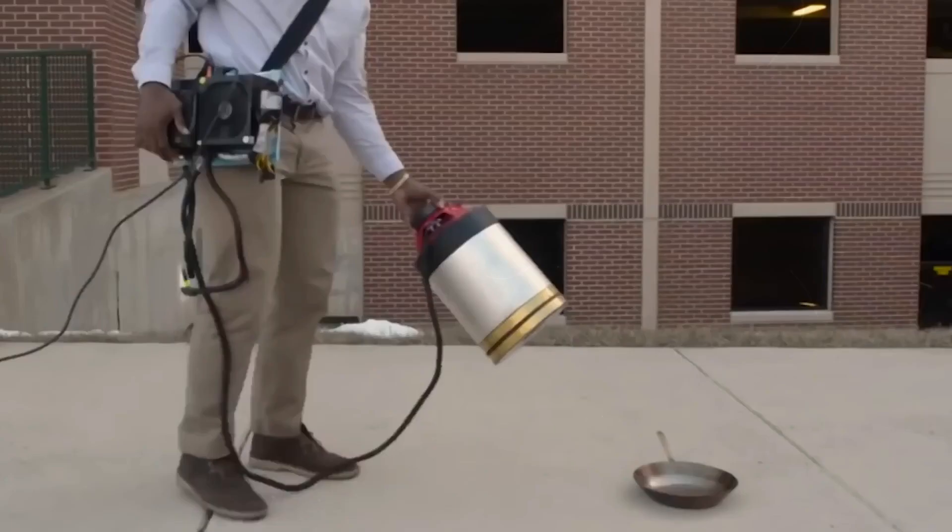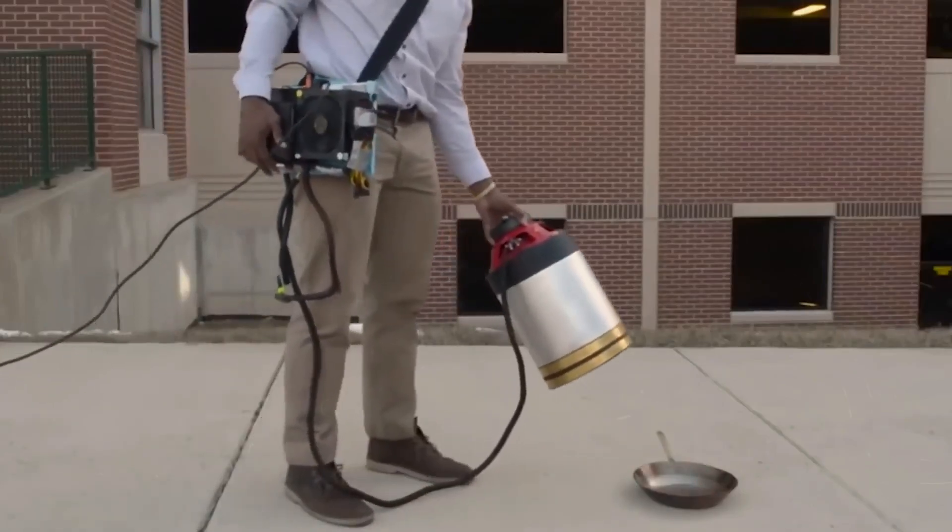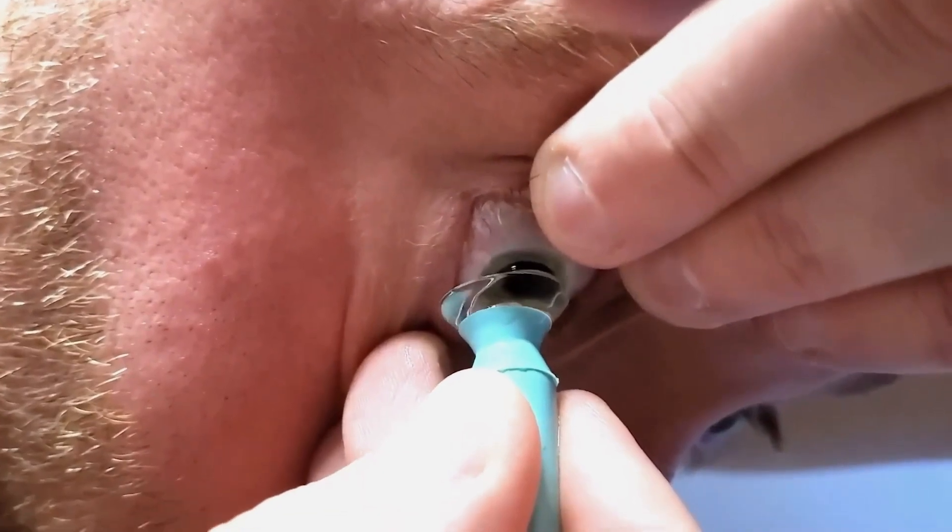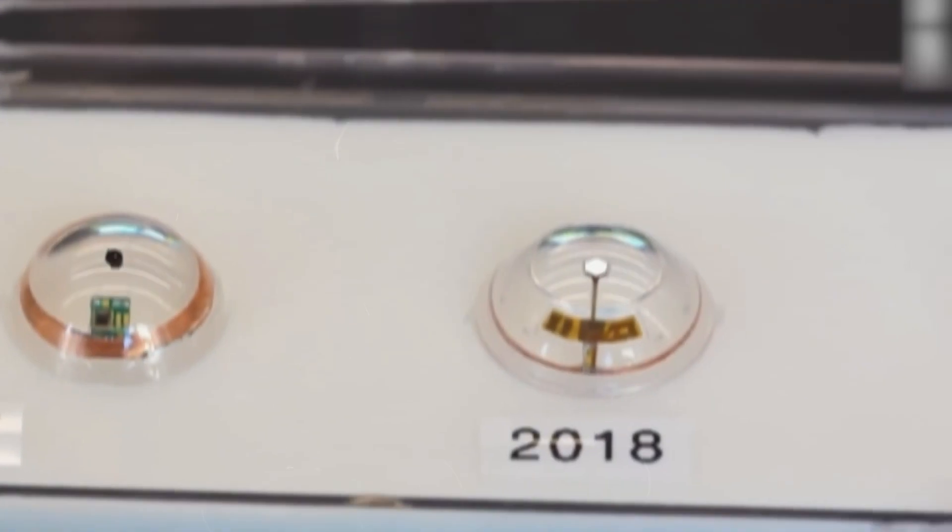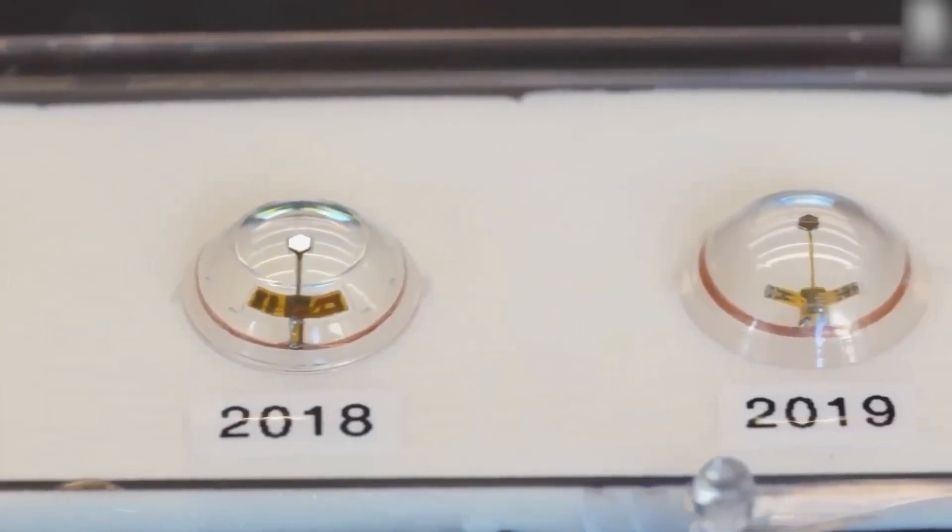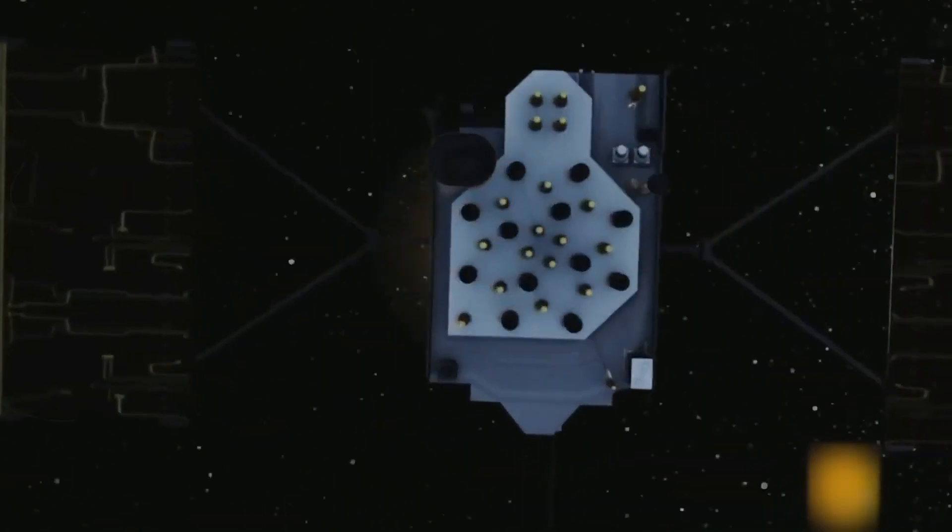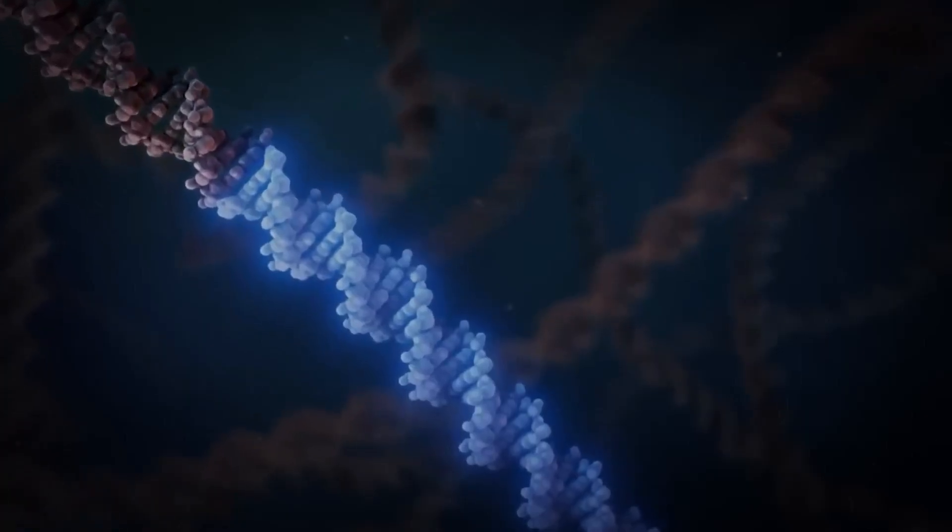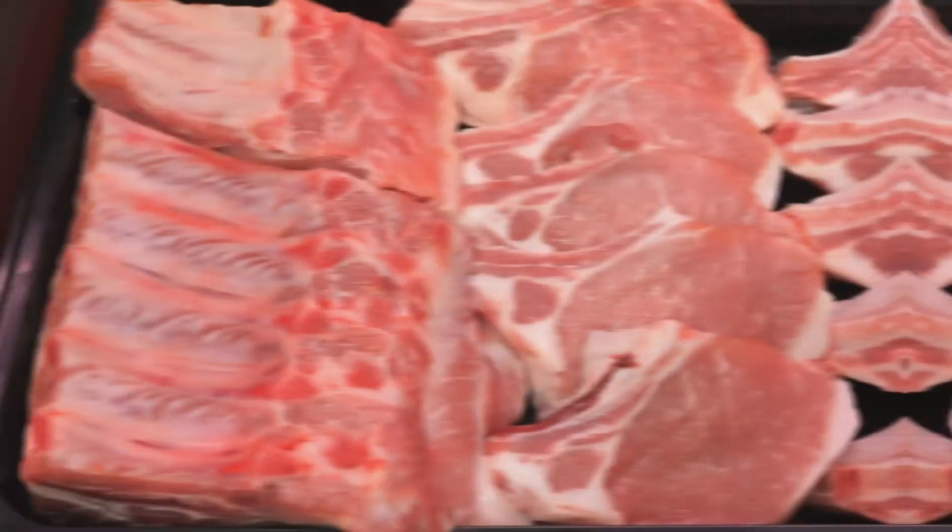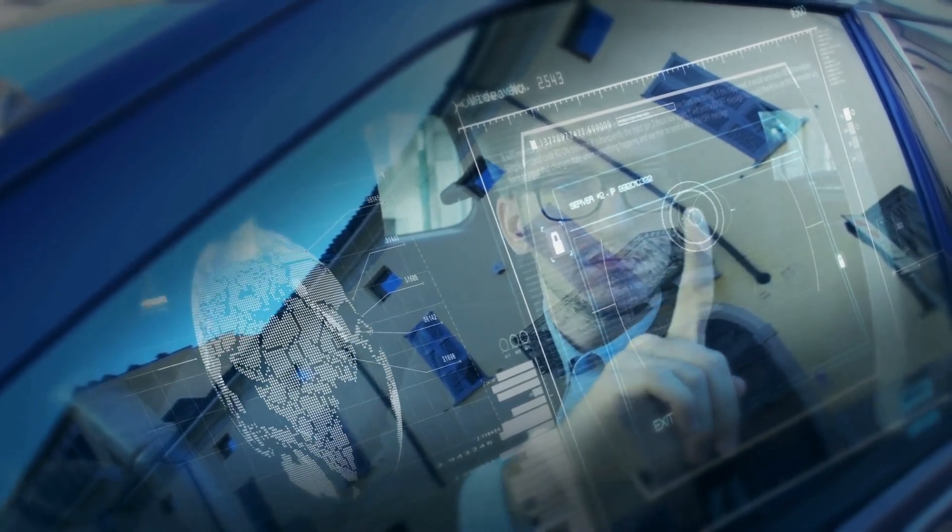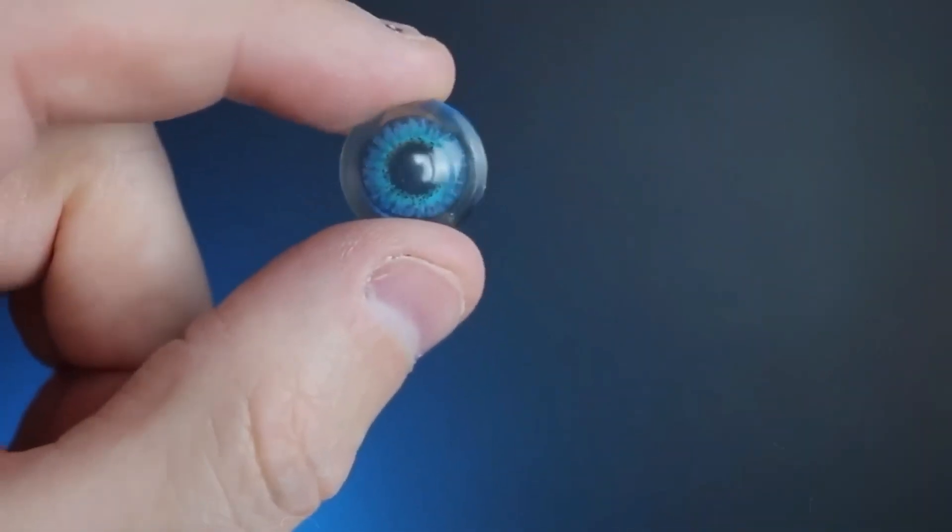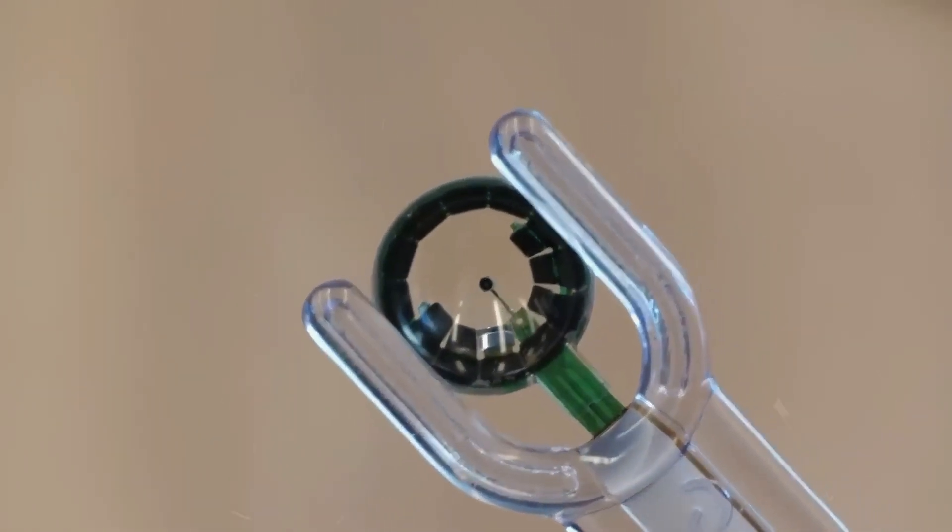The world is experiencing an unprecedented technological revolution that is set to reshape our lives in unimaginable ways. From the dawn of smartphones to the current era of smart contact lenses, from conventional rocket launches to kinetic energy-based satellite deployment, from graphene's versatility to gene therapy's potential, and from augmented reality to cultivated meat, emerging technologies are pushing the boundaries of innovation. In this video, we will delve deep into the 20 emerging technologies that promise to change our world.